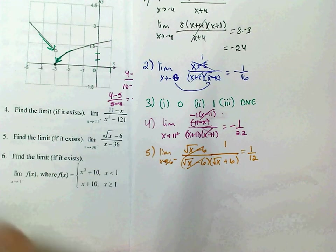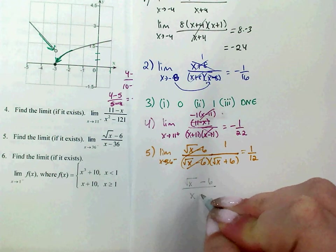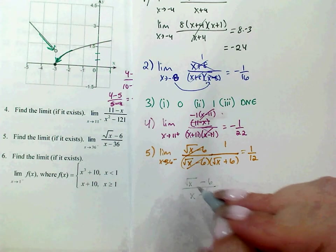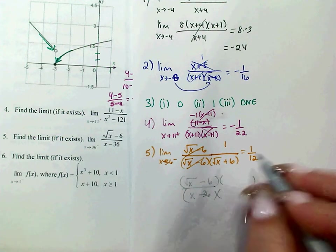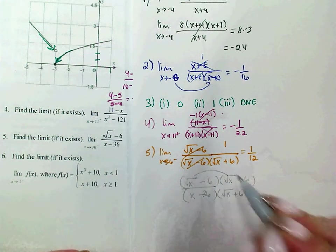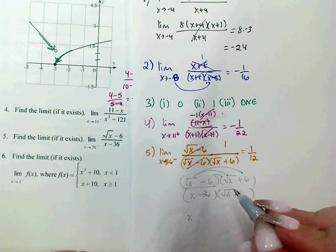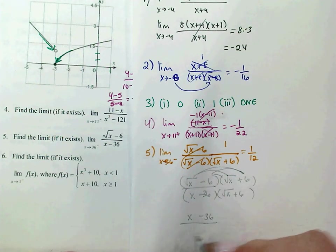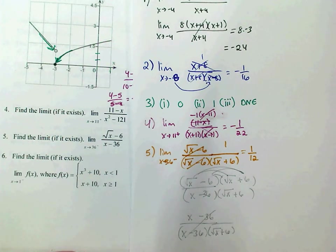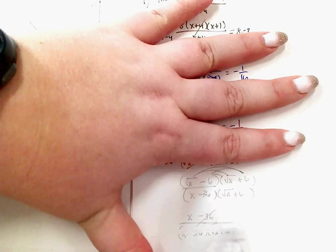Another option: multiply top and bottom by the conjugate, the square root of x plus 6. The numerator becomes x minus 36 after the middle terms cancel, and the denominator becomes x minus 36 times the square root of x plus 6. The x minus 36 terms cancel, leaving 1 over the square root of x plus 6 — the same result either way.